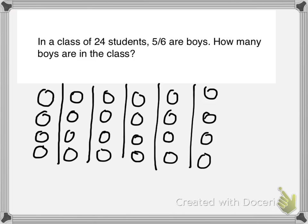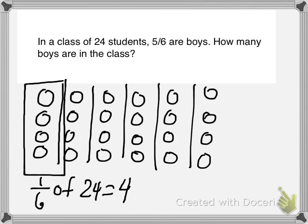Now we can see that 1 group of 24, or 1/6 of 24, is equal to 4. 1/6 of 24 is equal to 4 counters.